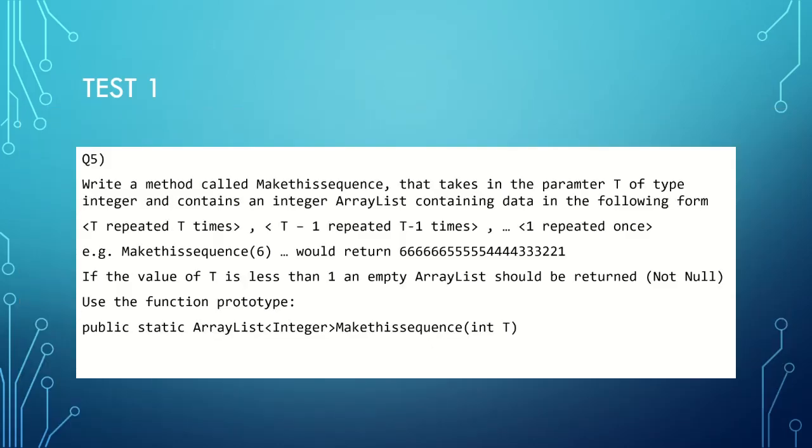We have our fifth and final question surrounding ArrayLists, which says write a method called makeThisSequence that contains the parameter t of type integer and returns an integer ArrayList containing data in the following form - well that's a mouthful. T repeated t times, t minus one repeated t minus one times, all the way to one repeated once. So literally exactly the same format of question as we had in our previous sequences question - I believe that was question three. This does look extremely familiar where, again, makeThisSequence six will return six sixes, five fives, four fours, three threes, two twos and one one.